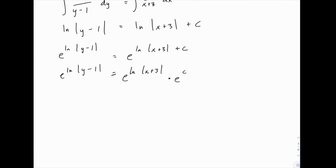At this point, the e raised to the power of the natural log, those cancel, and we just have the absolute value of y minus 1 equals the absolute value of x plus 3, times e raised to a constant. Now that e to the power of a constant is really also just a constant. So I'm going to call that k, rather than carrying e to the c around, which is just a little bit messier. So we'll just call that k.